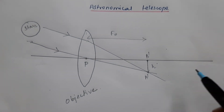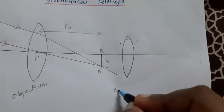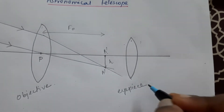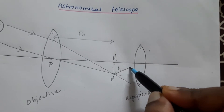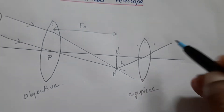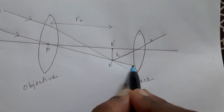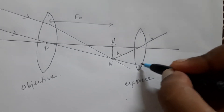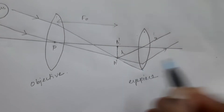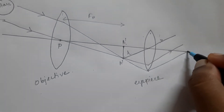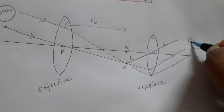Now I am taking another lens — the eyepiece. The ray from this image passing through the optical centre of the eyepiece passes straight through. Another ray, when extended, falls on the eyepiece and refracts accordingly. A third ray continues in a similar direction, allowing you to view the final image through your eye.